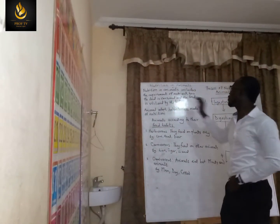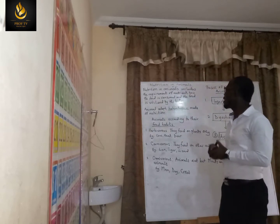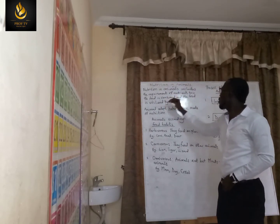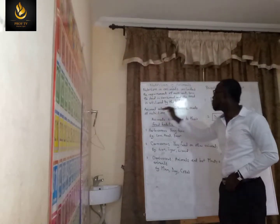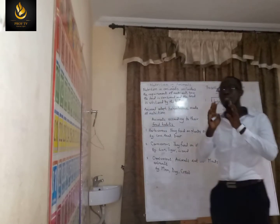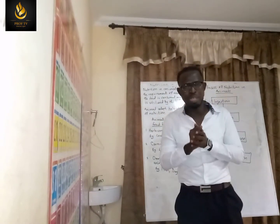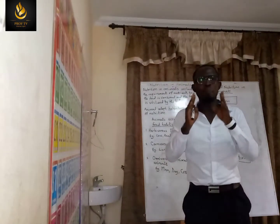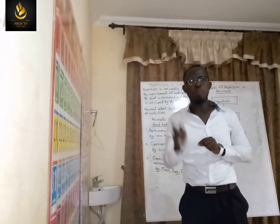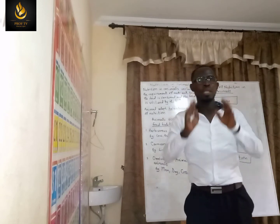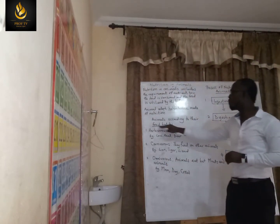Food is consumed and then utilized by the body. So in nutrition in animals, it is not just eating the food, but also utilizing the food that was eaten. Animals adopt a heterotrophic mode of nutrition because they are unable to prepare their own food. The mode of nutrition is broken down into three categories under food habits in animals.